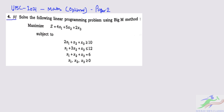What it says is: solve the following LPP using the Big M method and maximize Z = 4x1 + 5x2 + 2x3, subject to: 2x1 + x2 + x3 ≥ 10, x1 + 3x2 + x3 ≤ 12, x1 + x2 + x3 = 6, and x1, x2, x3 ≥ 0.